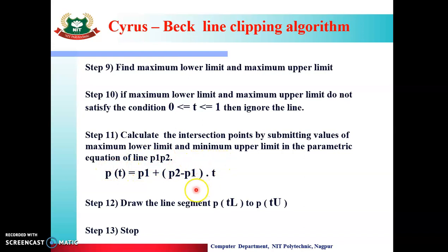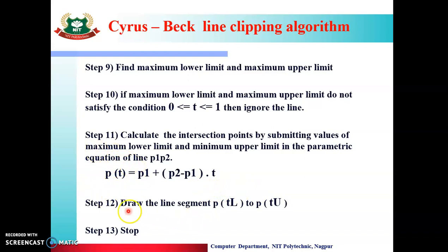We put the values of tL and tU into the parametric equation and calculate the intersection points. Then we draw the line segment from P(tL) to P(tU). We draw only the visible portion of the line from T lower to T upper on the screen, and clip the remaining portion. The last step is stop.